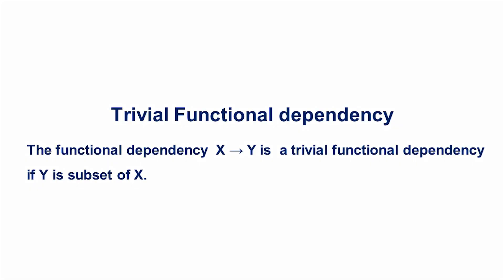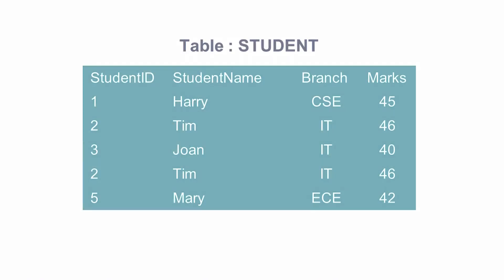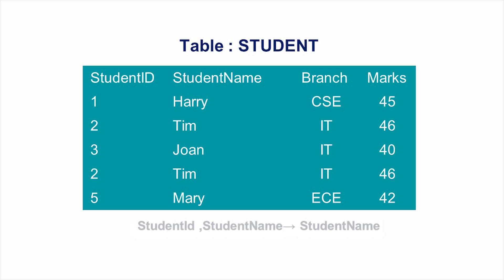The functional dependency X determines Y is a trivial functional dependency if Y is a subset of X. For example, consider the table shown here. The functional dependency student_id, student_name determines student_name holds on the table. Here, the right hand side is a subset of the left hand side. Hence, it is a trivial functional dependency.